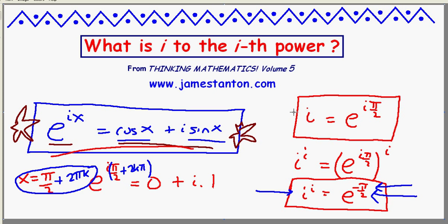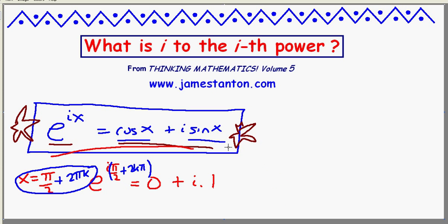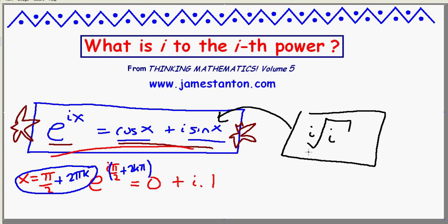My little challenge for you to end off this particular video is can you use Euler's identity to now work out for me, or for yourself I should say since I'll never see it. What is the i-th root of i? How can one make sense of that? That is, find a number, be it real or imaginary, that multiplied by itself i times, whatever that means, gives you the answer i. Go for it.